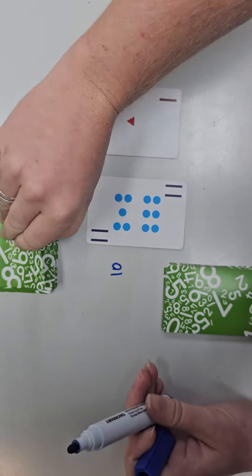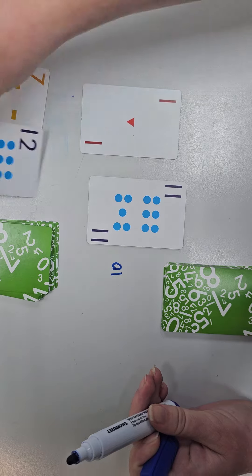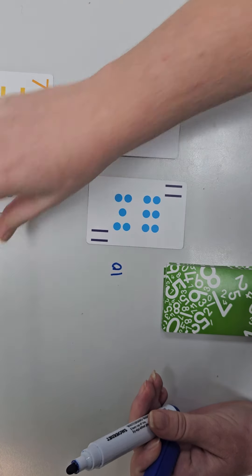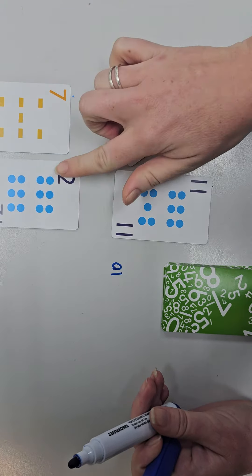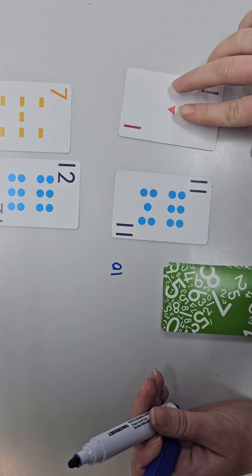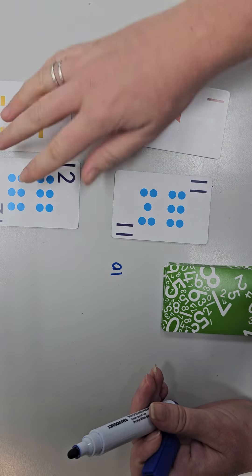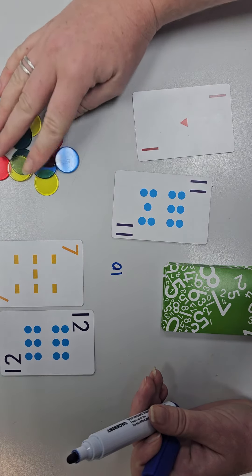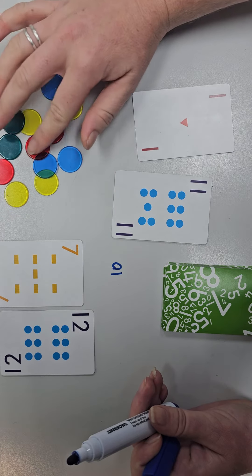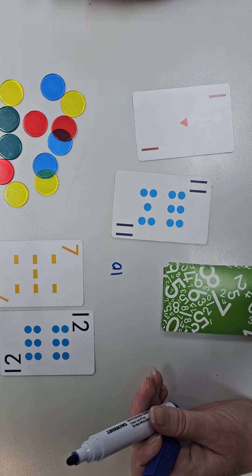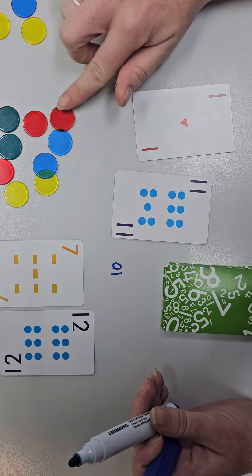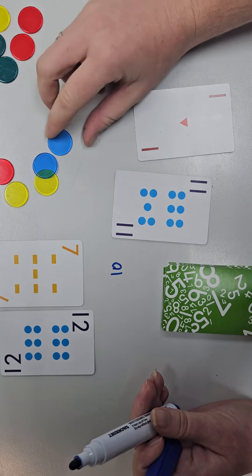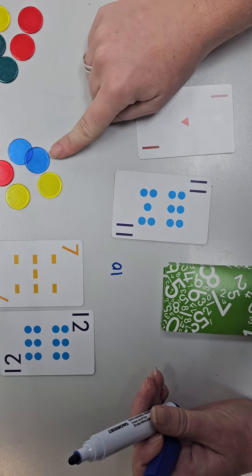The next person then flips over their cards and they have got twelve, take away seven. So they might choose to use some counters to solve their problem. So they've counted out twelve counters and then take away seven. One through seven, and our answer is five left.